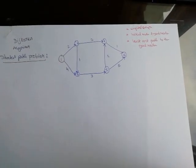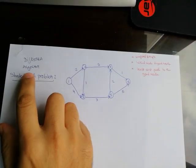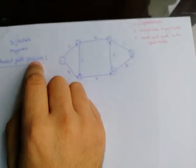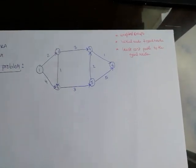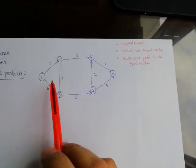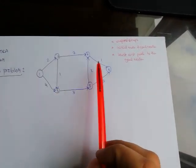The second model to consider is Dijkstra's algorithm shortest path problem. As we can see here, we have vertices, which could be machines, and we need to connect them all together.